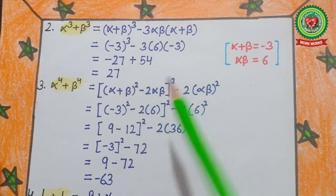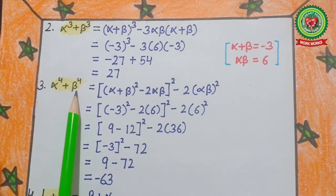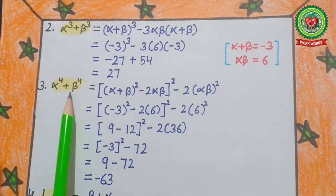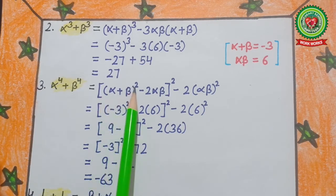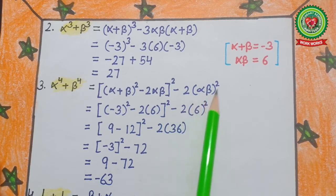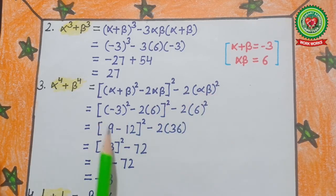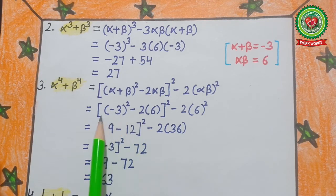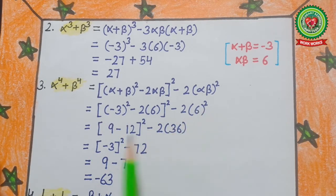Third question: α⁴+β⁴. Using the formula derived earlier: [(α+β)²−2αβ]²−2(αβ)². After filling in the values — (−3)²−2×6 whole squared, minus 2×6² — after solving, our answer is −63.